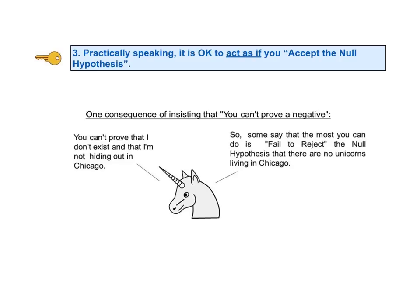What's the reasoning behind saying "fail to reject" instead of "accept"? It seems to go back to the premise that you can't prove a negative. That is true if we require 100% accuracy, but hypothesis testing does not strive for 100% accuracy — it works with a level of confidence, often 95%. In fact, if we could get 100% accuracy, we would not need hypothesis testing; we would just answer our question via counting, measurement, or precise formula. And here's one consequence of insisting you can't prove a negative: you can't prove that unicorns don't exist.